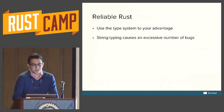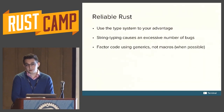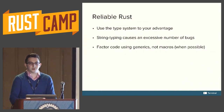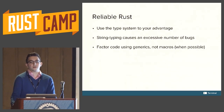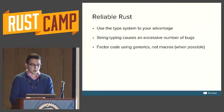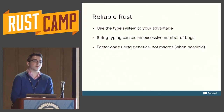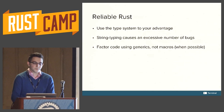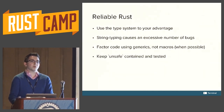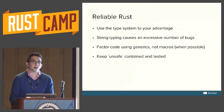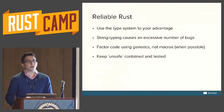You can factor code using generics and not macros. We talked about Thrift using macros for code generation, but by using traits in the existing system, we can actually avoid most of that code generation. Generics are checked, and that yields much better code structure than trying to use macros for the same things. You can keep unsafe contained and tested — this is a really important point if you actually want to benefit from Rust's safety guarantees. Sometimes if you're interacting with very low-level APIs or calling into C, you need unsafe. It's a lot better to segregate unsafe into as small a section as possible, expose a safe API, and heavily test it.